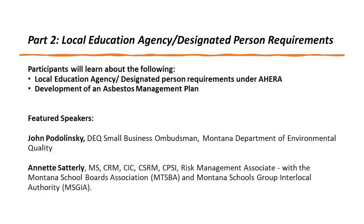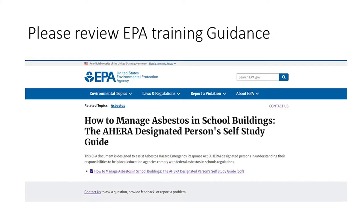Today you're going to learn about the requirements as an LEA DP as it relates to AHERA. You're also going to learn about the development of your asbestos management plan, a key component as a DP. The training is based off of the EPA guidance, "How to Manage Asbestos in School Buildings," the AHERA Designated Person Training Study Guide. We encourage you to review this document along with this training and the other sessions. You will need to refer back to this guidance quite often, so being familiar with the document will be most helpful as a DP.